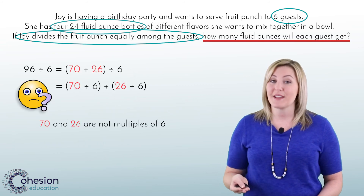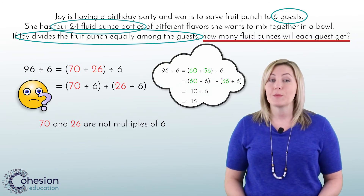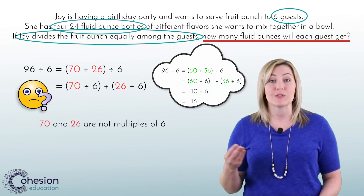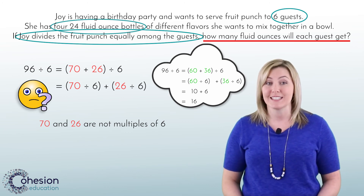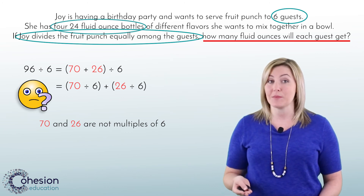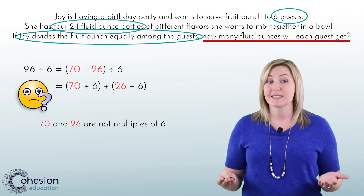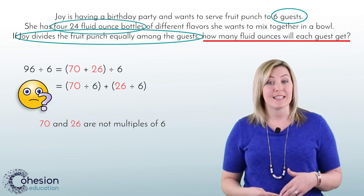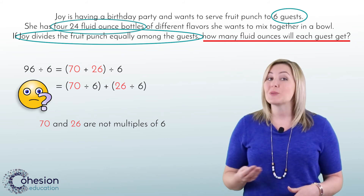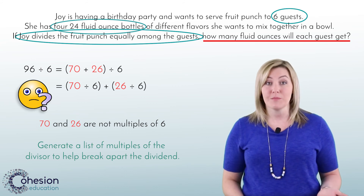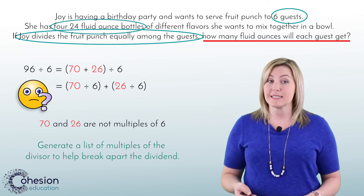Another common error that can occur is that students may not break apart the numbers correctly. For example, when we broke apart 96 we chose 60 and 36 because they were multiples of 6. In this non-example, 96 was split into 70 and 26 — these two numbers add up to 96 but cannot be evenly divided by 6. To address this error, have students write out a list of multiples of the number they are dividing by — in this case, 6.